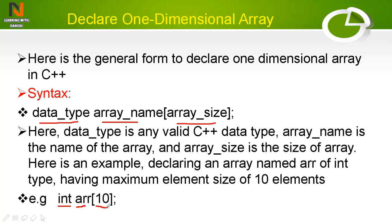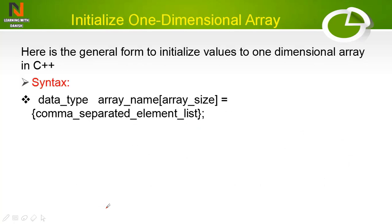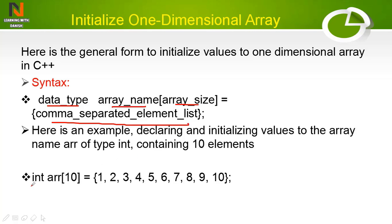For the initialization syntax: first write the data type, then the array name, then in the brackets write the array size, followed by an equals sign, and in curly braces write a comma-separated list of elements. For example: int is the data type, 'adr' is the array name, its size is 10, and in the braces you write 10 elements: 1, 2, 3 up to 10. This is the initialization of 10 elements in the array.